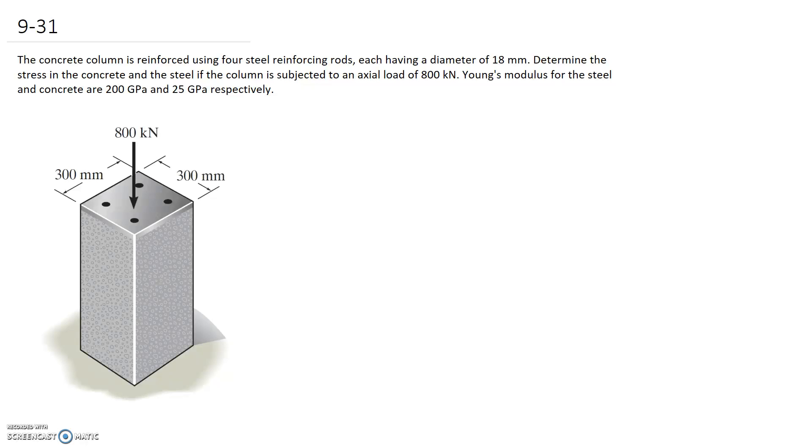Young's modulus for the steel and the concrete are 200 and 25 GPa respectively. So the first thing I'm going to do is draw the free body diagram of the situation. From that I should be able to use my equilibrium equations to develop some relationship between the force in the steel and the force in the concrete.